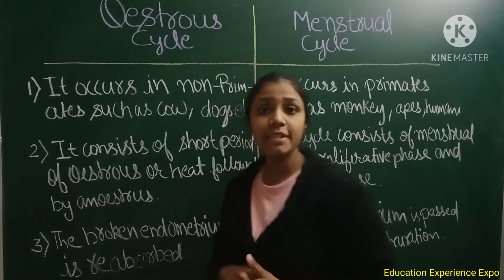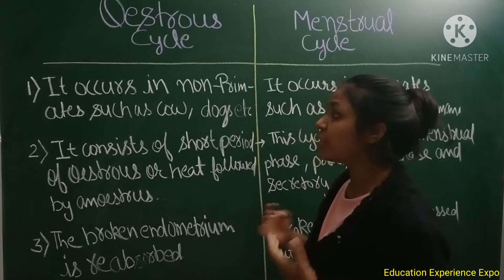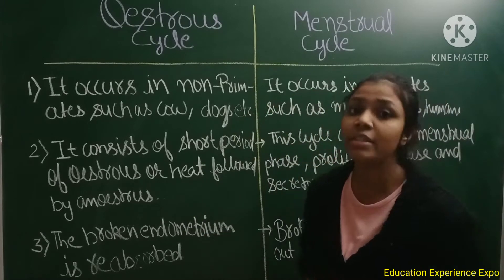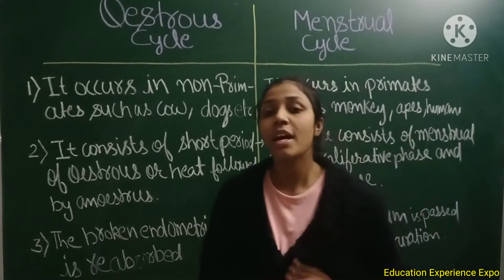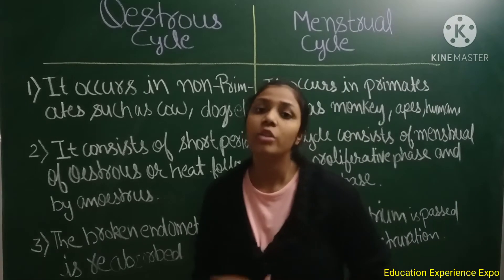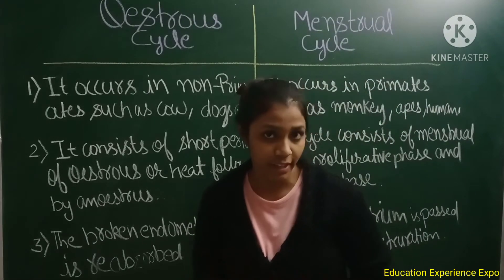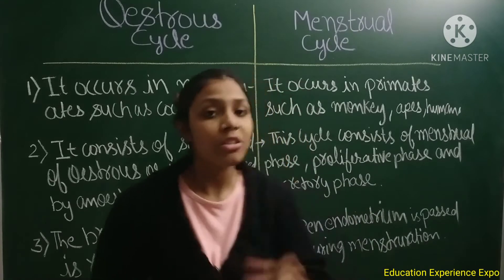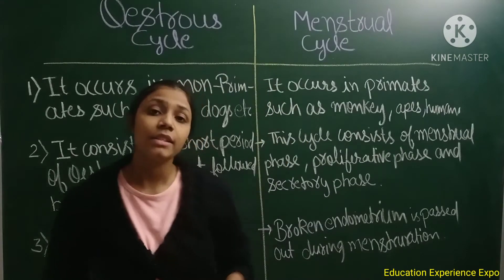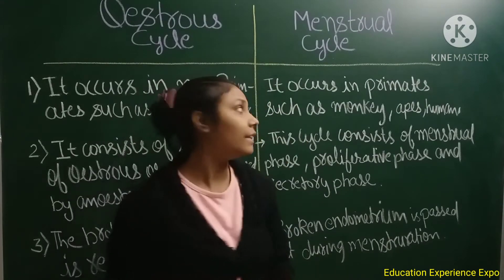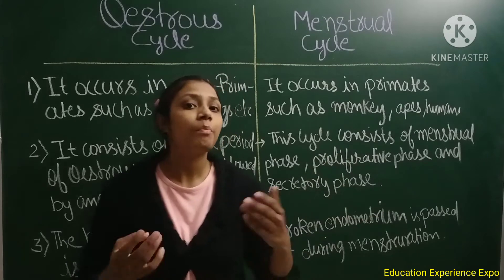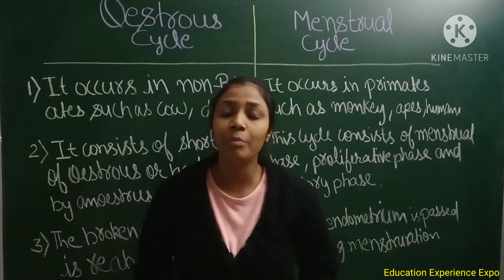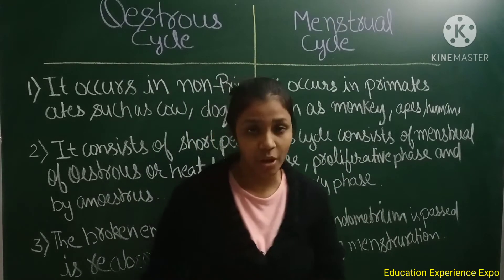Estrus cycle generally occurs in non-primates such as cows, dogs, etc. Whereas menstrual cycles occur in primates such as monkeys, apes, and human beings.